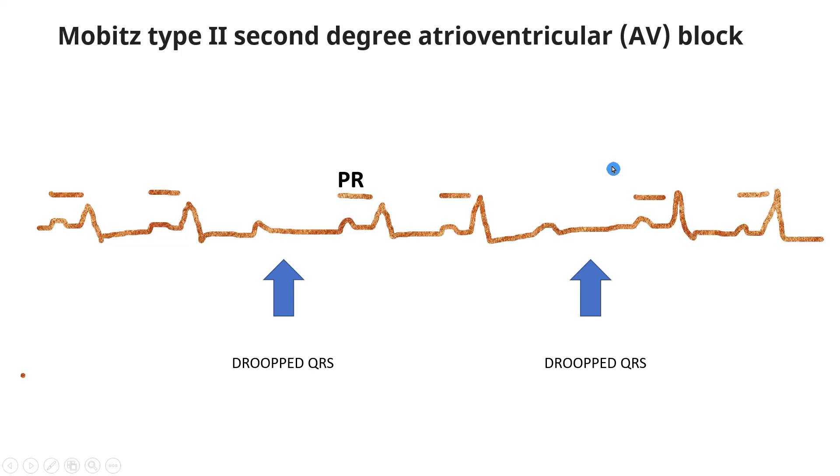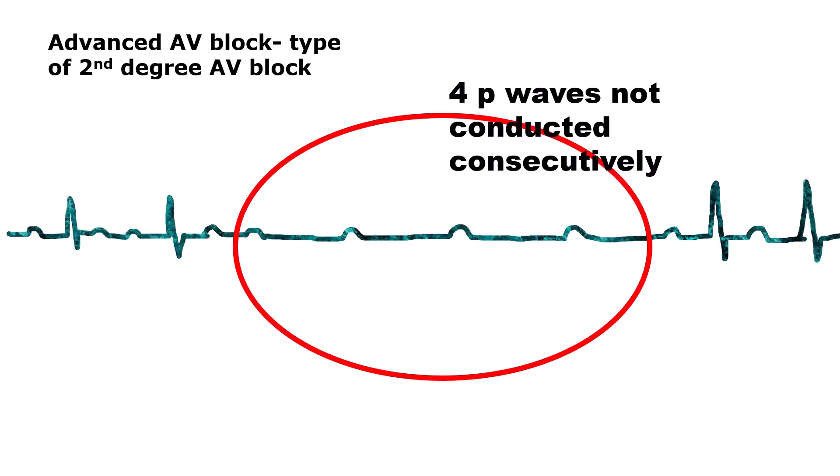A subset of second degree heart block occurs when there are multiple consecutive non-conducted P waves present, for example P to QRS ratios of 3 to 1 or 4 to 1. This finding is often referred to as high degree or advanced AV block. It can occur at any level of the conduction system.